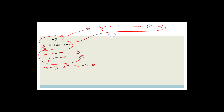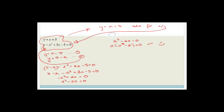Substituting y equals 5 minus x into the second equation: 5 minus x minus x squared plus 3x minus 5 equals 0. Expanding and collecting like terms: minus x squared minus x plus 3x is plus 2x, and 5 minus 5 goes away. So we get minus x squared plus 2x equals 0. Dividing by minus 1 gives x squared minus 2x equals 0. Taking out a common factor of x gives x times x minus 2 equals 0. Therefore x equals 0 or x minus 2 equals 0.